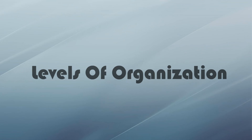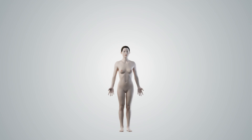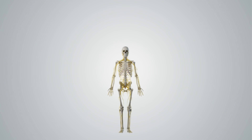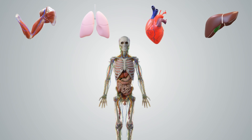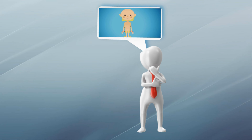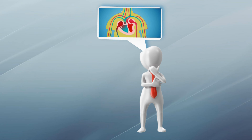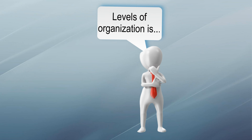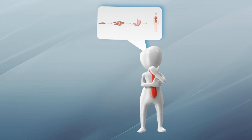Levels of organization: our body is an amazing wonder of the world. It is much more complex and complicated than it is thought to be. It is made up of different organs and organ systems, but how does it work? How do all the different components come together to keep us alive, keep us functioning, and achieve our goals? In this video, we are going to look at the levels of organization in organisms, from smaller than cells to bigger than organs.